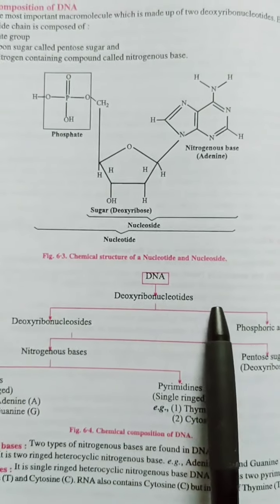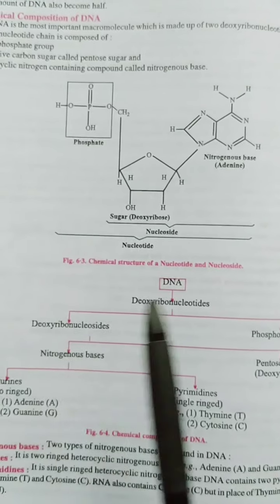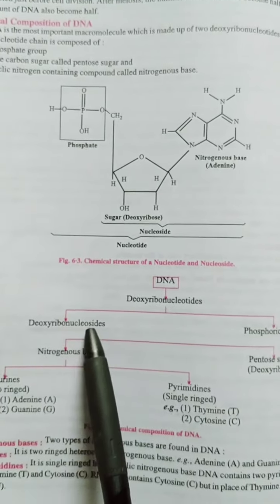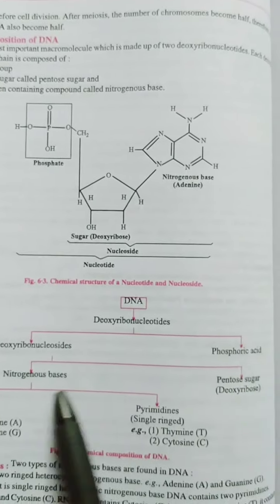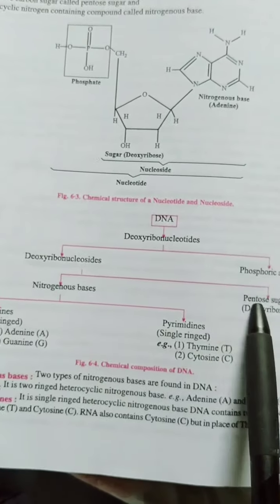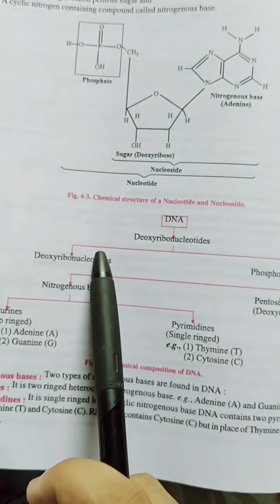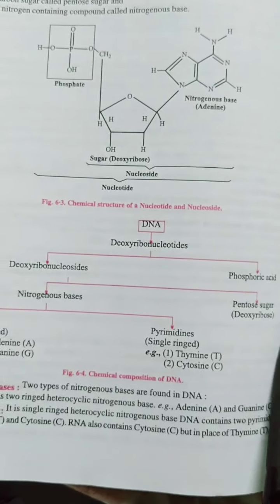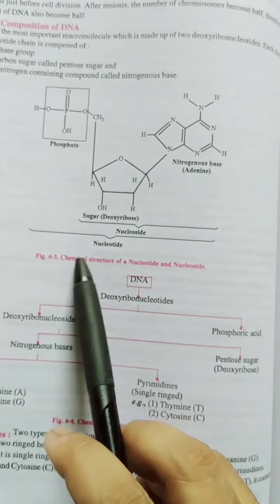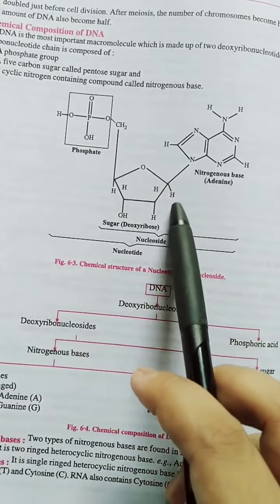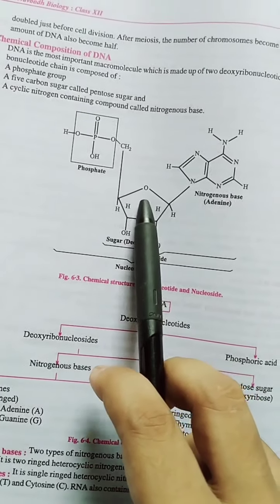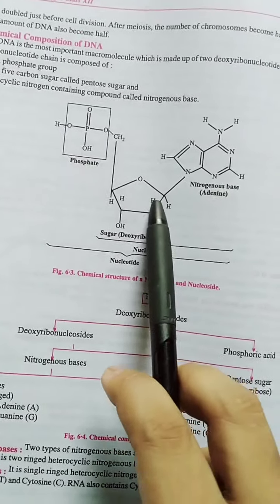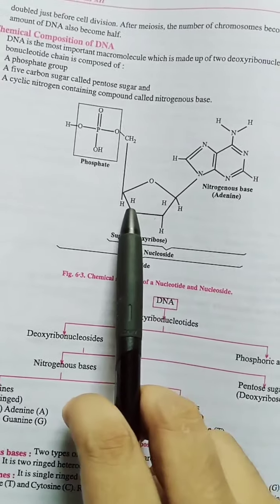DNA — what is DNA? DNA is deoxyribonucleotides. It is made up of deoxyribonucleosides and phosphoric acid. These are the basic two components. Deoxyribonucleosides are made of nitrogen bases and pentose sugar. If you look at the chemical structure, this is the pentose sugar that lacks an oxygen molecule at the second carbon. Because of that, this is the deoxyribose sugar.